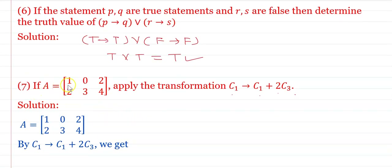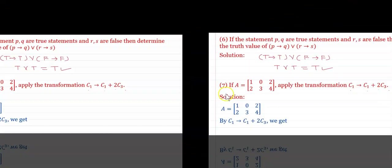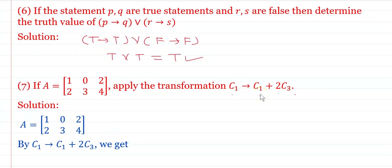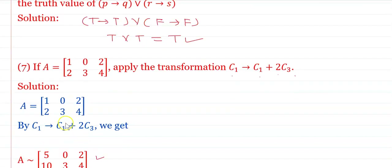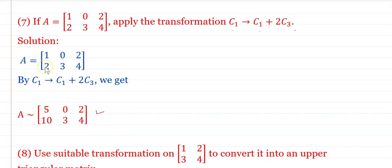If matrix A = [[1, 0, 2], [2, 3, 4]], apply the transformation C1 → C1 + 2C3. The operation is on the first column: replace C1 with C1 + 2×C3. First row: 2×2 = 4; 4 + 1 = 5. Second row: 2×4 = 8; 8 + 2 = 10. Therefore the new matrix A = [[5, 0, 2], [10, 3, 4]].